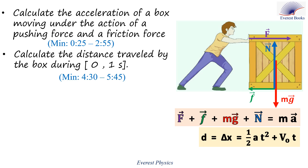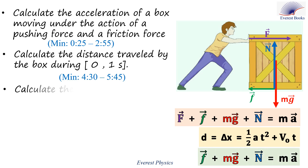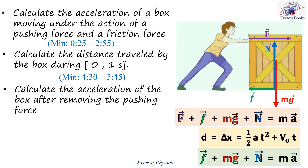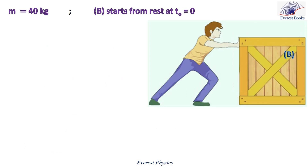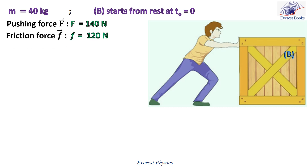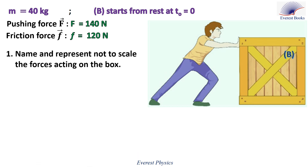We will calculate the distance traveled by the box during the time interval 0 to 1 second, calculate the acceleration of the box after removing the pushing force, and calculate the time needed by the box to stop. Fadi pushes a wooden box B of mass M equal to 40 kilograms by applying a horizontal force F of magnitude 140 newtons. The box starts from rest at time 0 and moves along a horizontal track. The friction force acting on B has a magnitude of 120 newtons and has a direction opposite to that of the motion of B. Neglect air resistance.